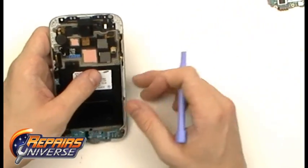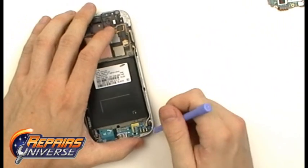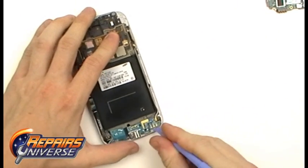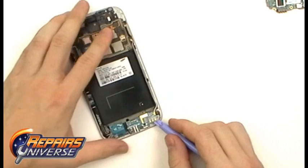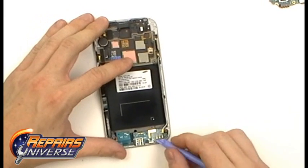Now that we have the motherboard removed, we are going to remove this lower flex cable. Just simply use the safe open pry tool and gently pry this up. It is held in place with a little bit of adhesive, so be careful not to rip or damage the cable.